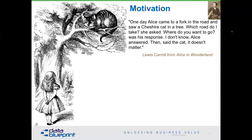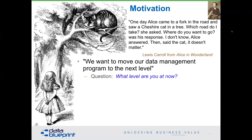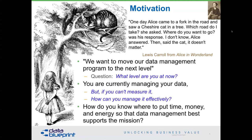Melanie and I are both fans of Lewis Carroll, and the Cheshire Cat at the Fork in the Road is a perfect metaphor for this. Alice comes to the Cheshire Cat and says she wants to move data management practices to the next level. The cat says: well, what level are you at now? If you don't know, you can't measure it. How are you going to manage it effectively, or know where to put the time, money, and effort into these programs without some guidance? That's the beauty of what Melanie has created in this process.